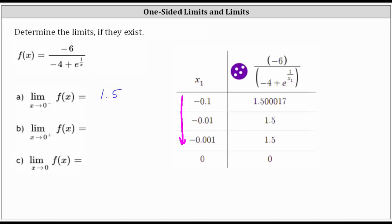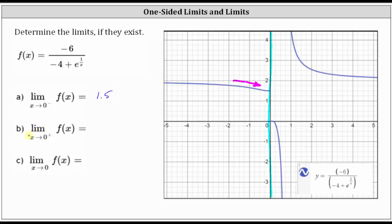Now let's go back to the graph. We have the limit of f of x as x approaches zero from the right or positive side. So now we're approaching x equals zero from values larger than zero, and we can see as we get closer and closer to zero from the right, we are approaching the function value of zero. So the limit of f of x as x approaches zero from the right is equal to zero.